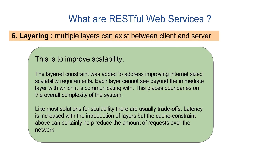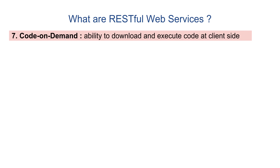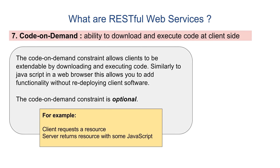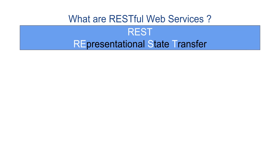The next concept is code on demand, and it is an optional constraint of REST web services. It is something like when you send a request and get back a response, the response has the ability to run some code or JavaScript on the client side. It extends the functionality of the client and is an optional constraint of REST.